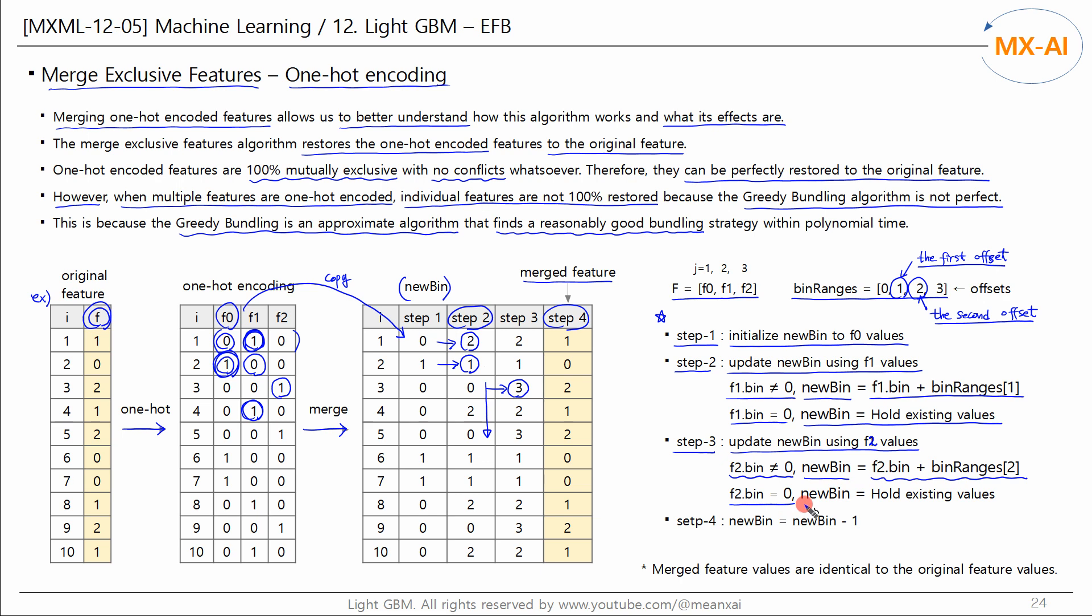If the value of F2 is 0, new bin retains its existing value. For the first data point, we keep the existing value like this. In this way, update all values of new bin.